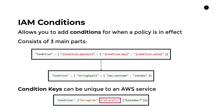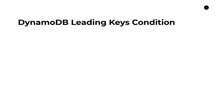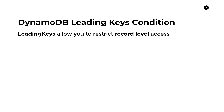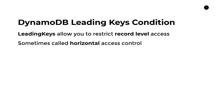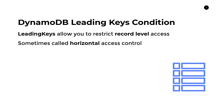Let's move on to leading keys. These are one of the condition keys useful for DynamoDB access control. Leading keys allow you to restrict record-level access to your DynamoDB table — sometimes called horizontal access control. To give a more visual example: if we have a table, leading keys allow you to restrict access to just a certain subset of rows that exist in it.